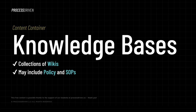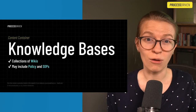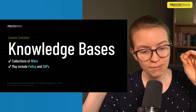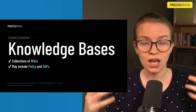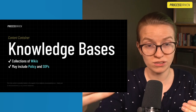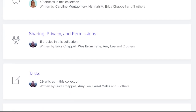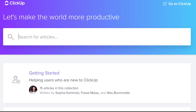Now I want to talk about the content containers. Remember, containers are not unique content types of their own — they're just like mixtapes of the other pieces of content we already talked about. The very first content container is a knowledge base. Knowledge bases are primarily collections of wikis, but they can often include policies and sometimes SOPs. Generally, when I'm thinking knowledge base, I'm thinking a collection of information — maybe for a specific purpose, but most of the time just general information. A good example might be the ClickUp help docs.